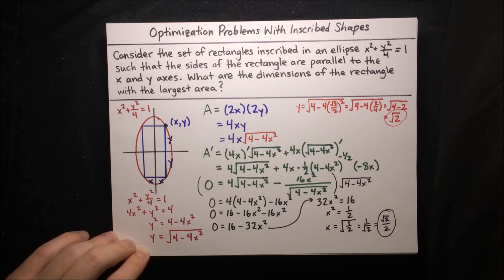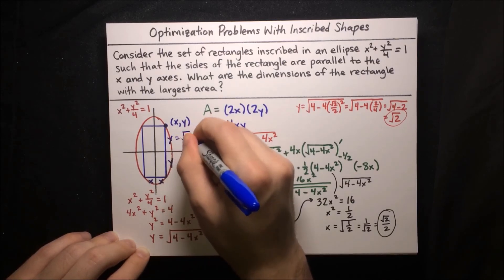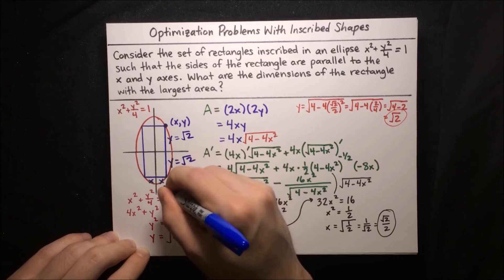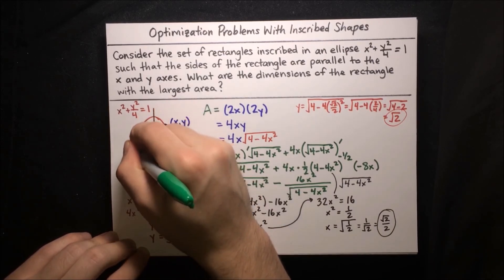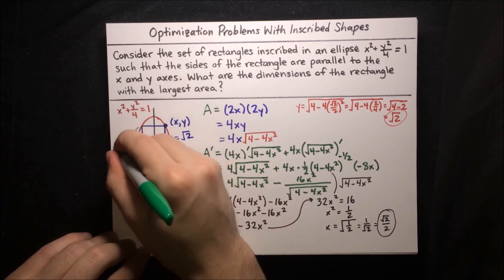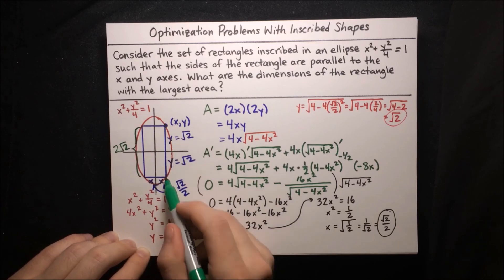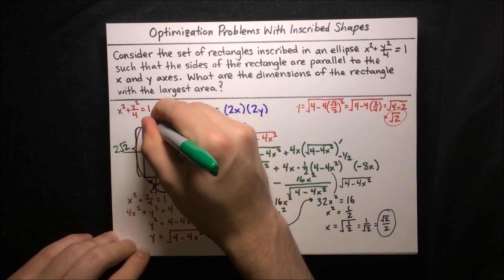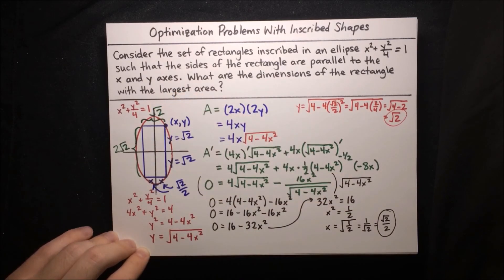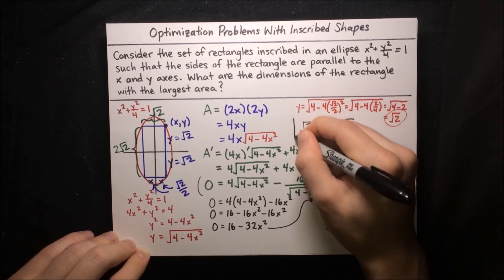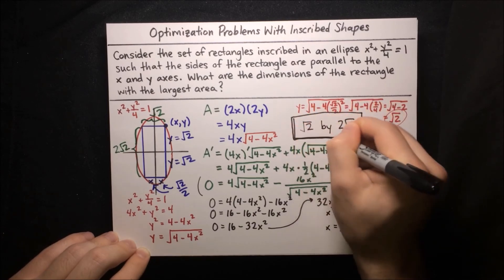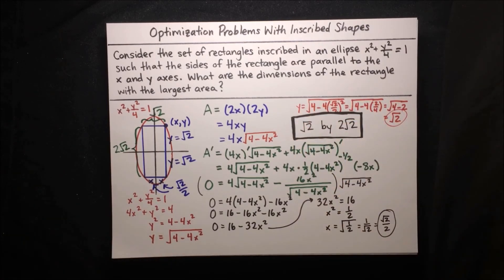We've found x and y. Labeling the diagram, y equals root 2 and both x values equal root 2 over 2. So the overall height of the rectangle is root 2 plus root 2, which makes 2 root 2, and the overall width is root 2 over 2 plus root 2 over 2, which makes root 2. The dimensions of the rectangle are root 2 by 2 root 2, and that is our final answer. Now we know how to do optimization problems with inscribed shapes, and in the future we'll continue learning how to apply calculus techniques to solve applied optimization problems.